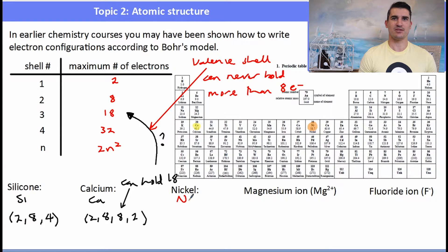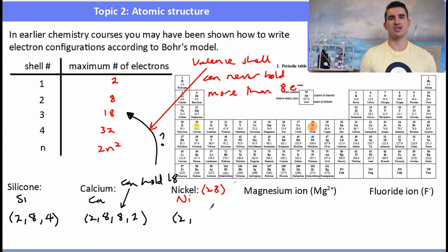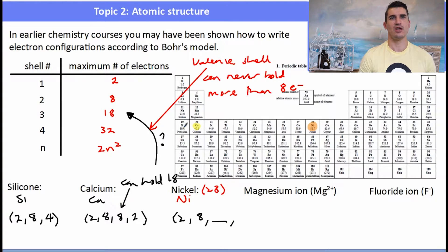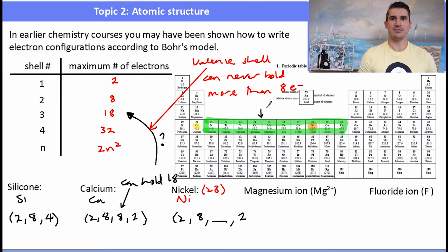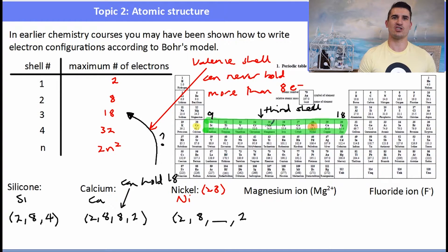Those extra electrons in the third shell come from the transition metals. After calcium, we move into the transition metals and place electrons back into the third shell. For nickel, we go: two, eight, then leave the third shell blank, put two electrons in the fourth shell, and then figure out the third shell. Counting across the periodic table from 9 to 16, nickel has 16 electrons in the third shell — the transition metals fill electrons 9 through 18 of the third shell.